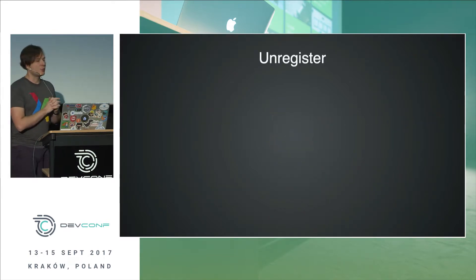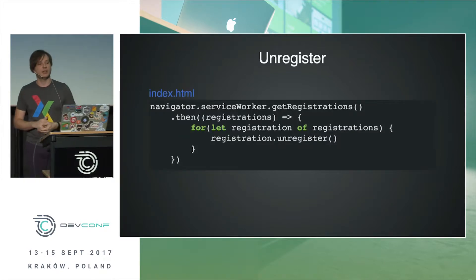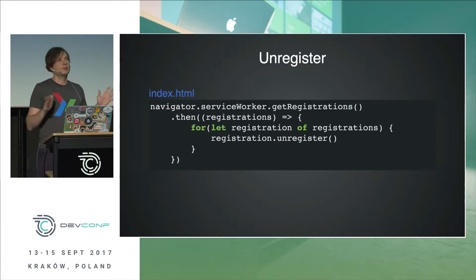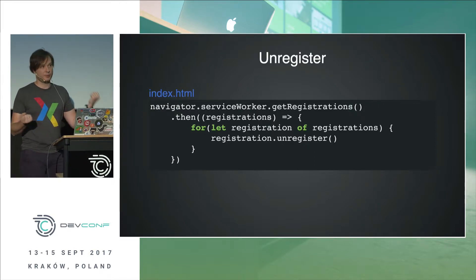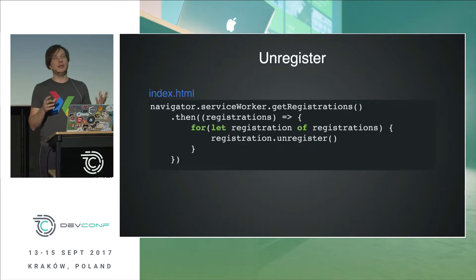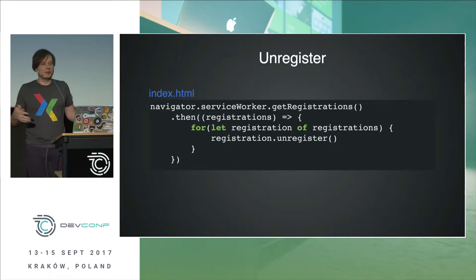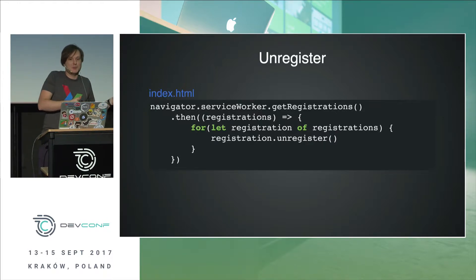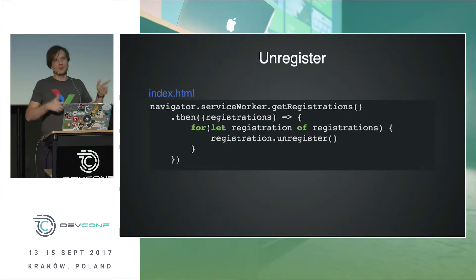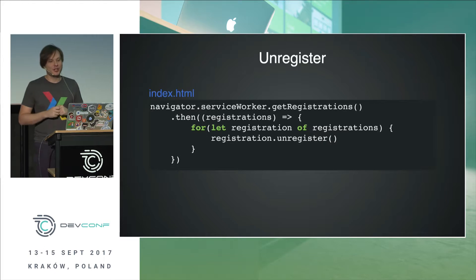We can unregister a Service Worker from our page — the code is simple, we just iterate through Service Worker registrations and apply the unregister method. But the point is: the page where we do this unregistration could be under control of this broken Service Worker. The page could be served from Service Worker cache, and there is a chance the user will not see this code until the old, broken Service Worker is still controlling this page. So this is kind of a chicken and egg problem.